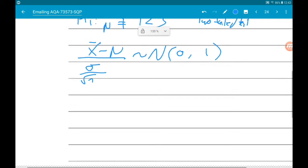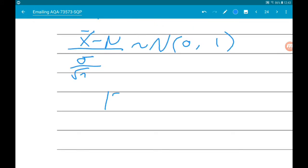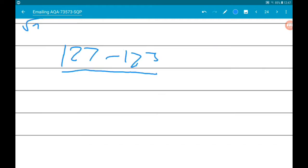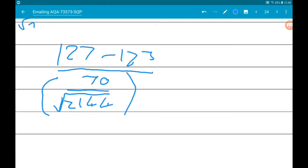So x bar is 127, mu is 123, sigma is the standard deviation that we were given, which is 70, and then that's over the square root of 12,144. Now if we plug that into our calculators, we will get 6.3 to 1 decimal place.